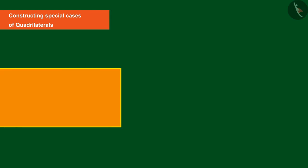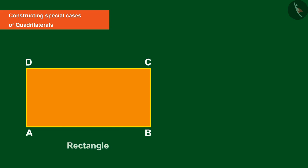Suppose you have to draw a rectangle ABCD whose adjacent sides are four centimeters and three centimeters. Can you create a rectangle ABCD using only these two measurements?